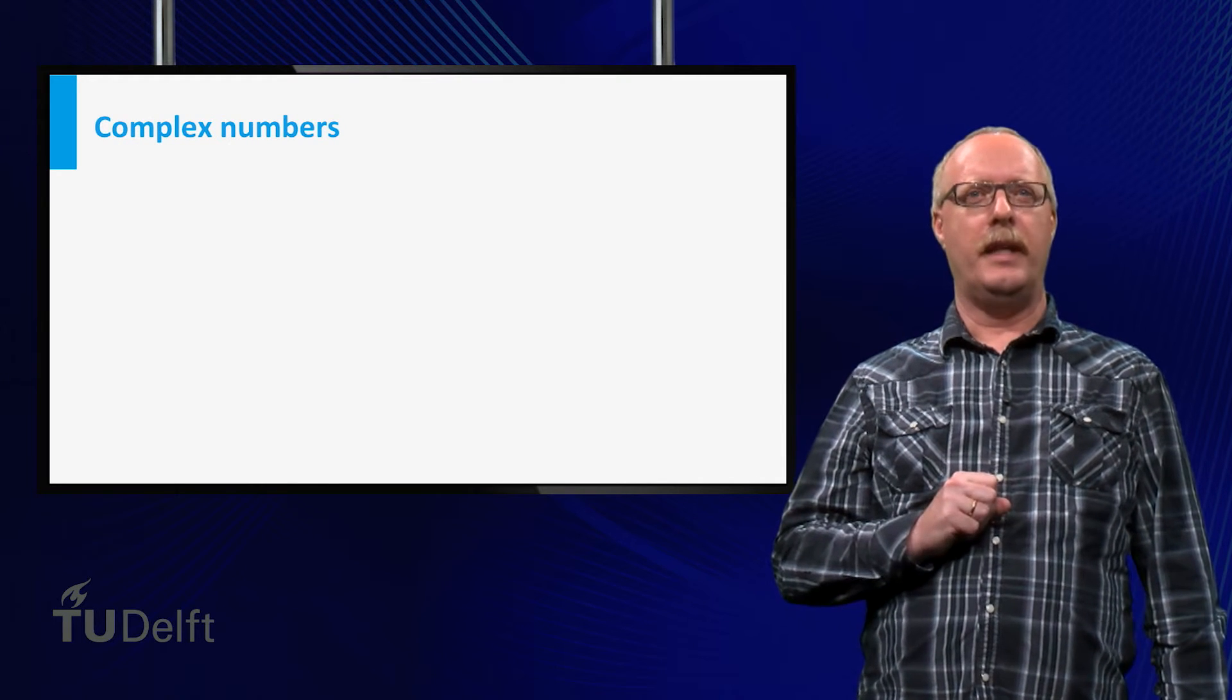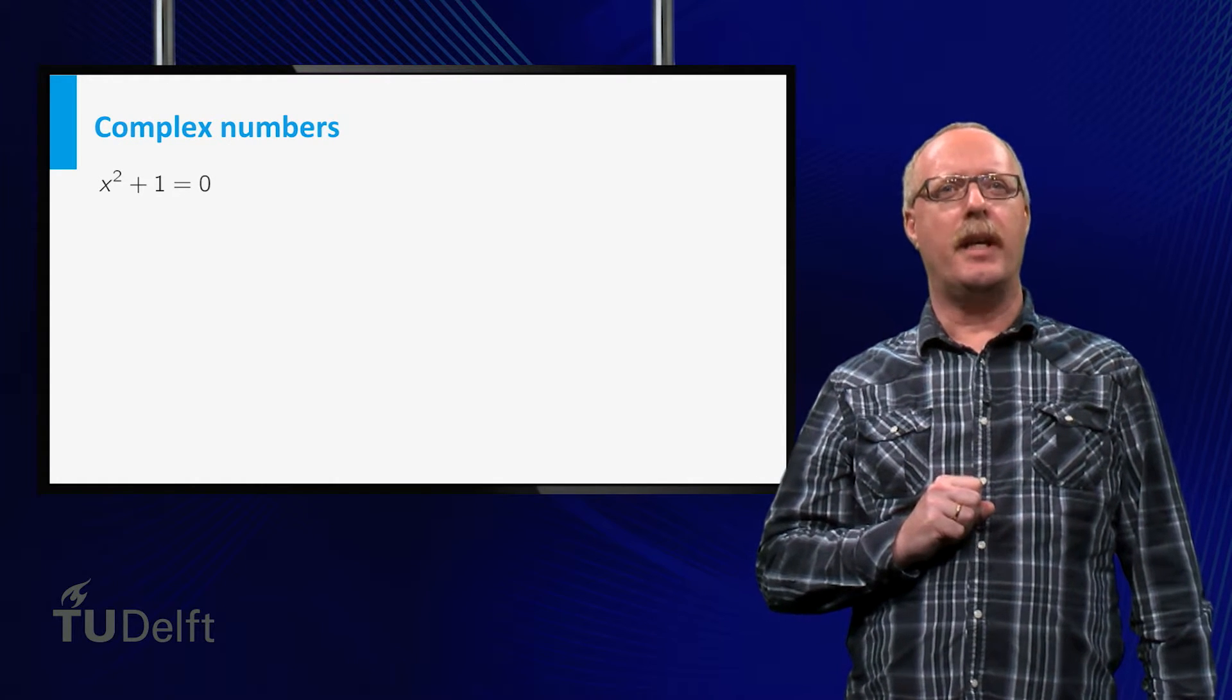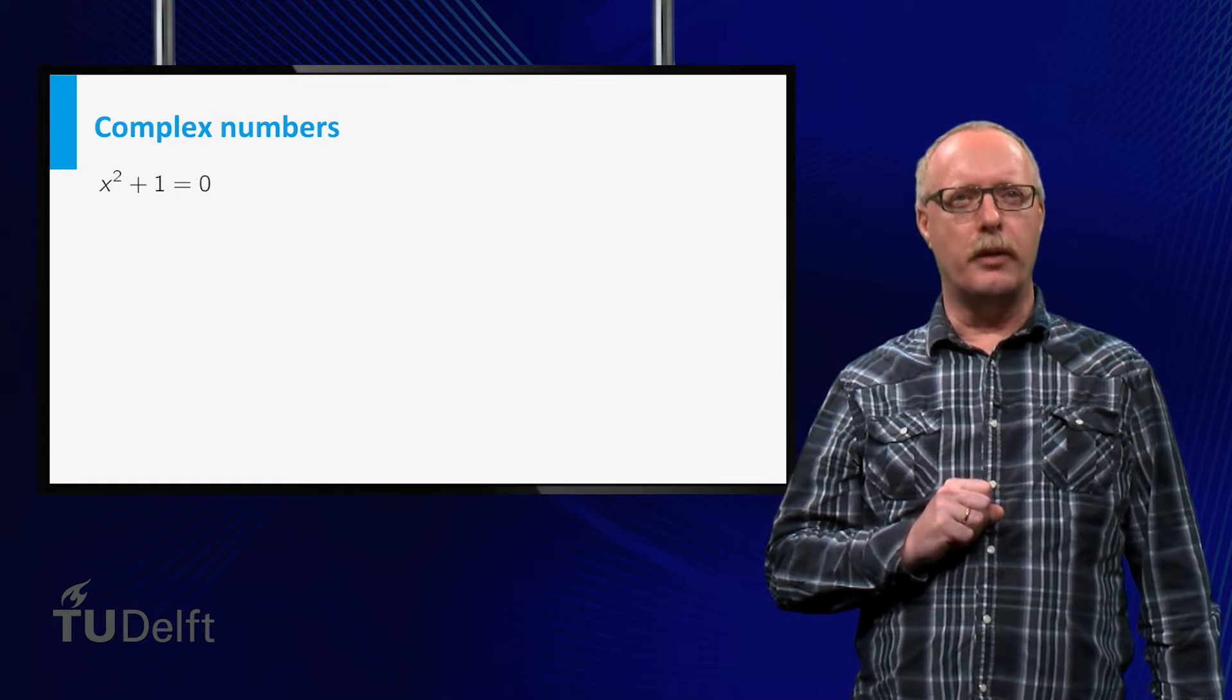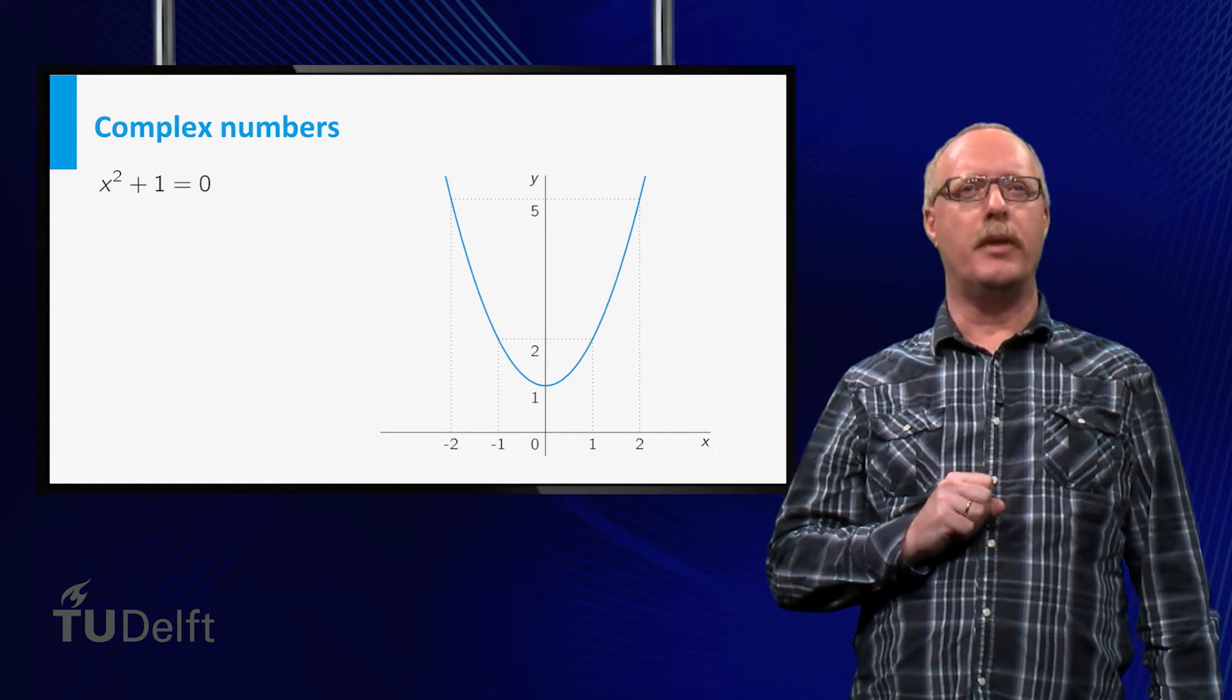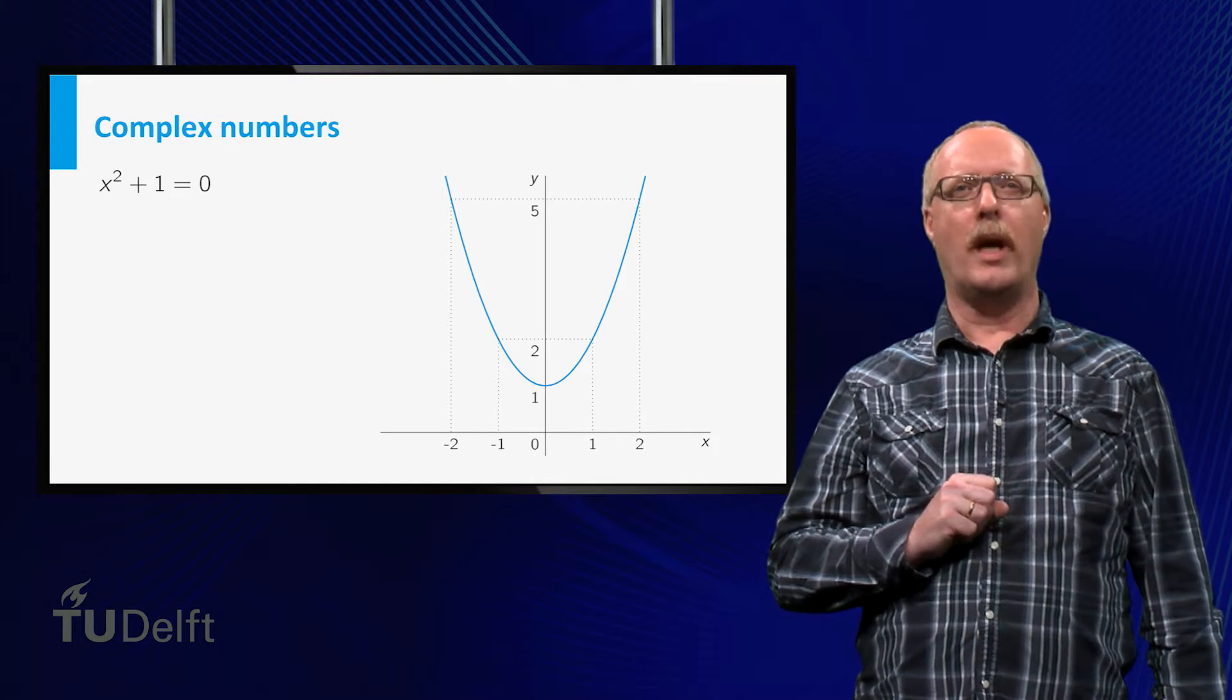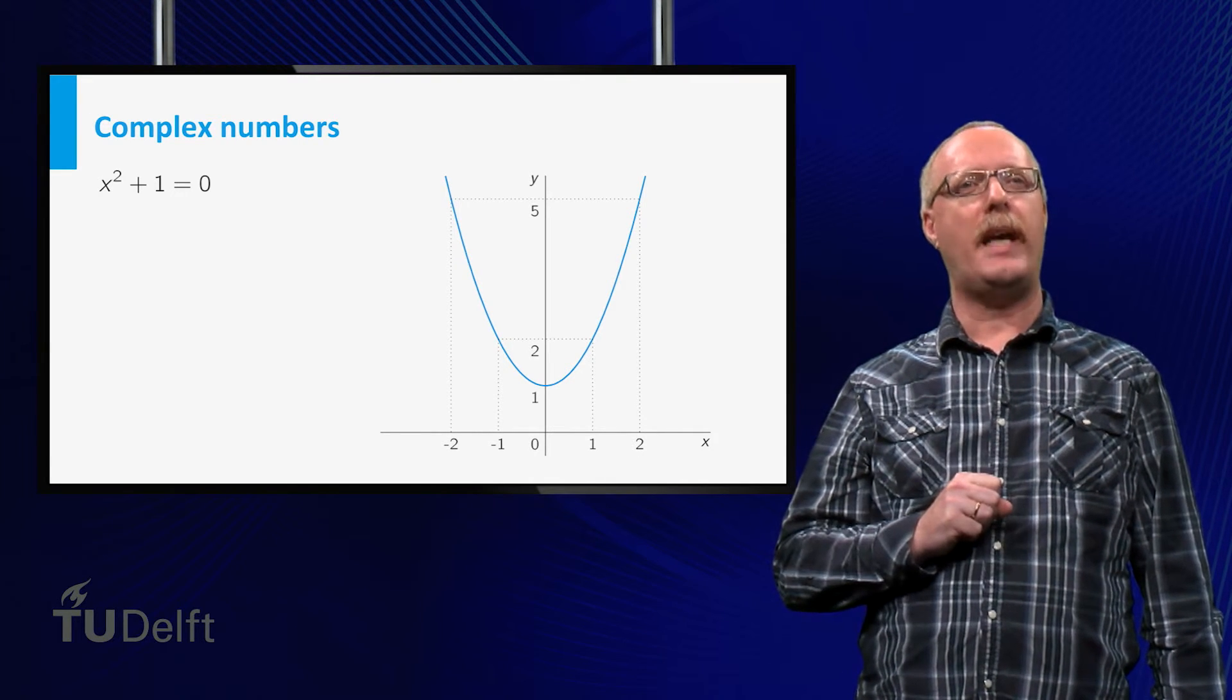For instance, it is clear that the equation x squared plus 1 equals 0 has no solutions. This becomes clear if we look at the graph of x squared plus 1. There are no intersections with the horizontal axis.